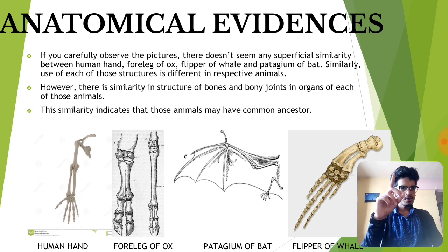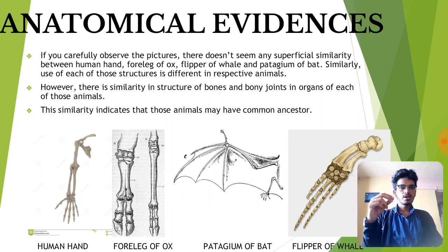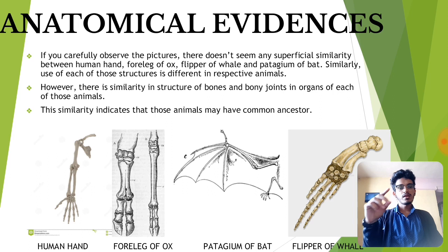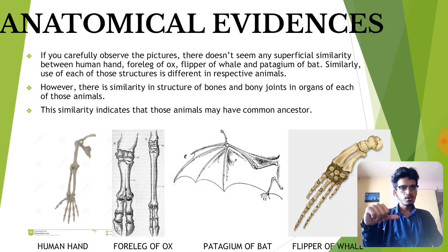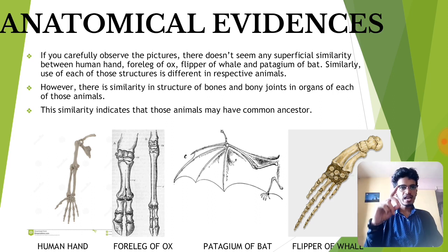Analogous organs are those organs which have the same function but not the same origin. For example, the wings of a bird and the wings of an insect do not have the same origin, but they have the same function: the function of flying.